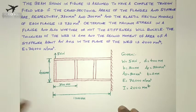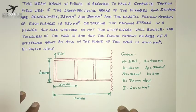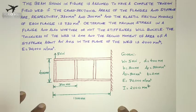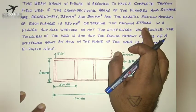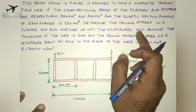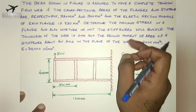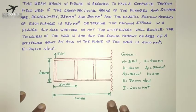We have two moment of inertia values: one is area moment of inertia, which is the resistance to bending, and the other is mass moment of inertia. So we have all the data. They ask you to find out the maximum stress of the flange and also whether the stiffener will buckle. We have formulas to find out the compressive load of a stiffener and we have to compare the compressive load with respect to the critical load.